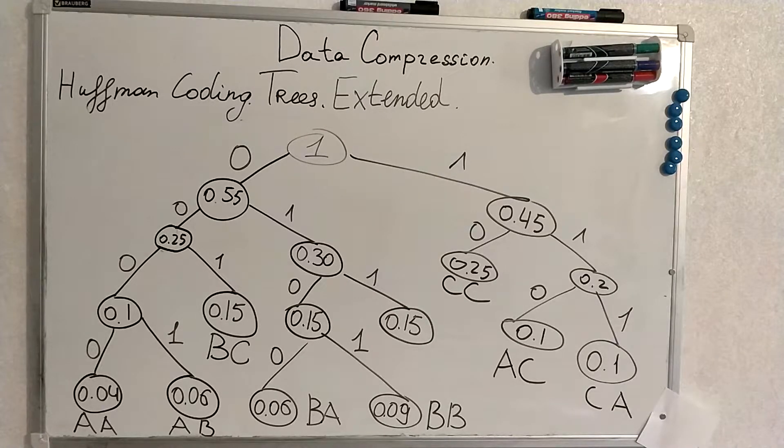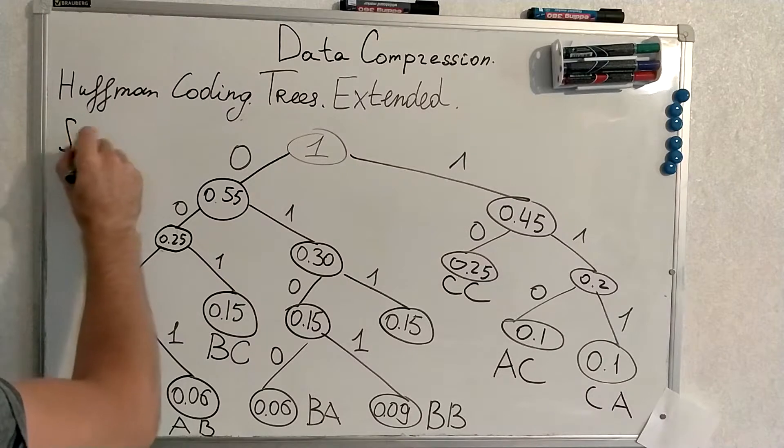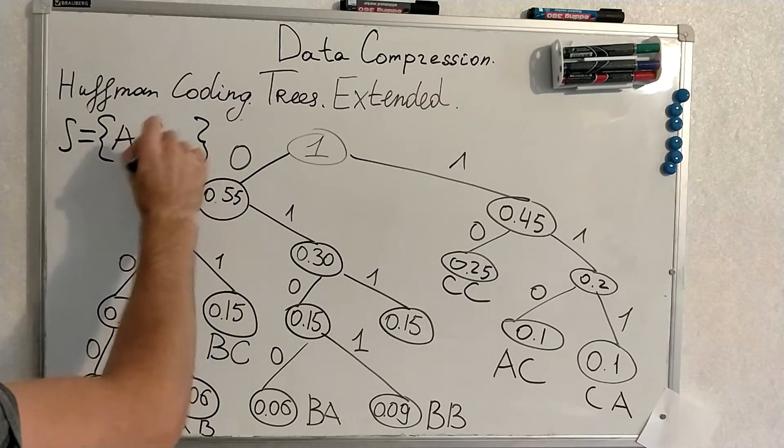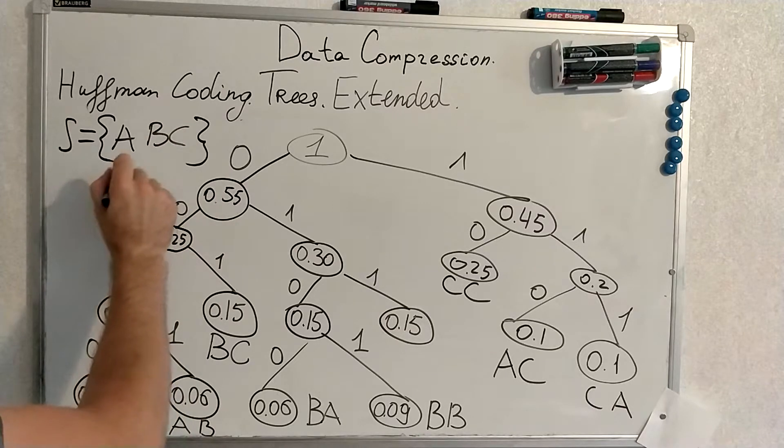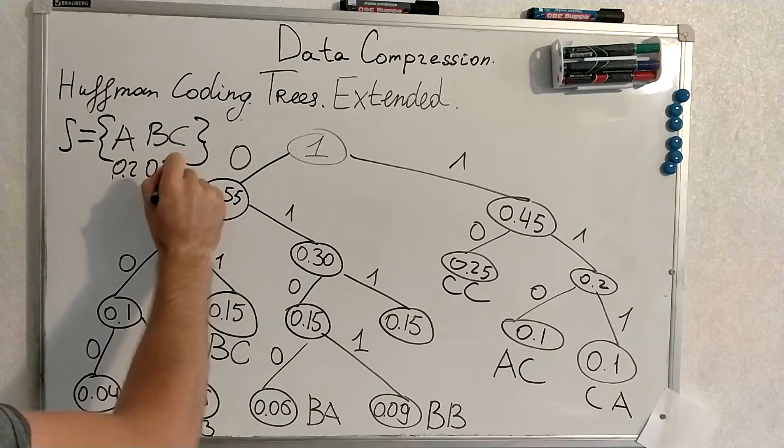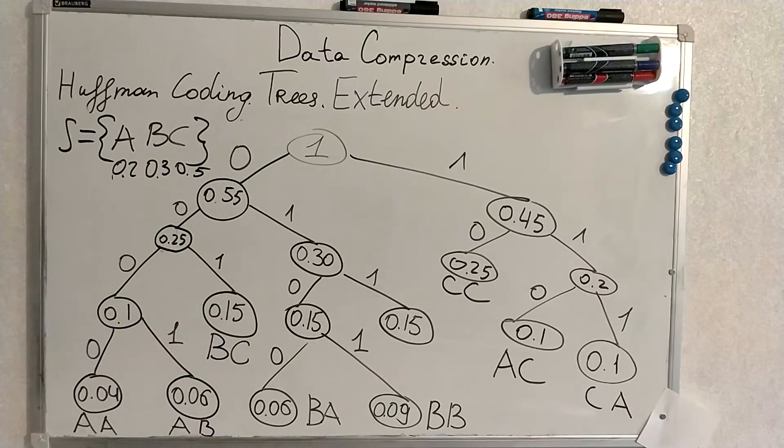Now, what we have done here is taken all our symbols from our source alphabet - from the explanation of the algorithm A, B and C, with their probabilities 0.2, 0.3 and 0.5 for C - and made concatenations of all these symbols, multiplying their probabilities.